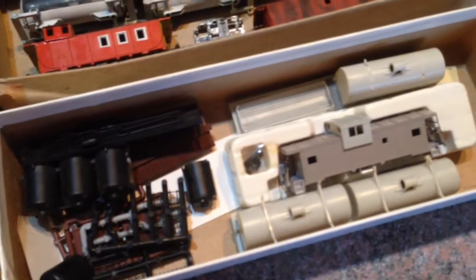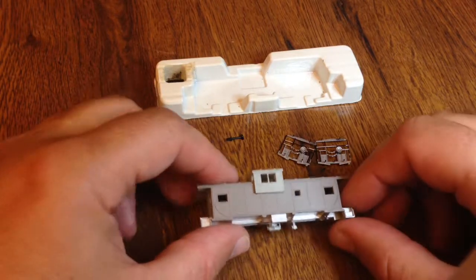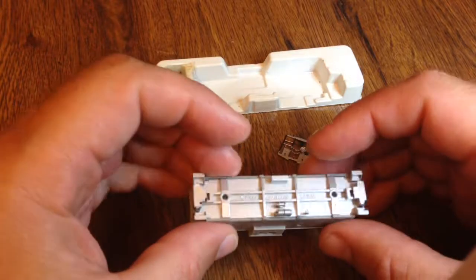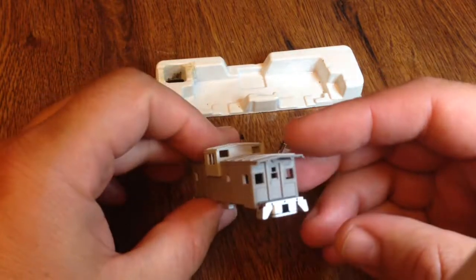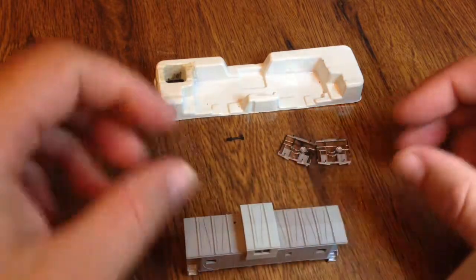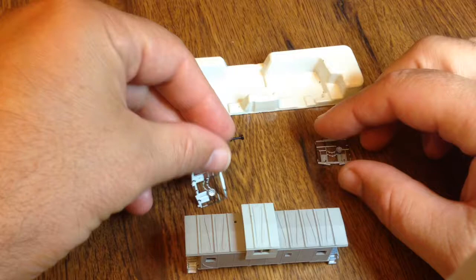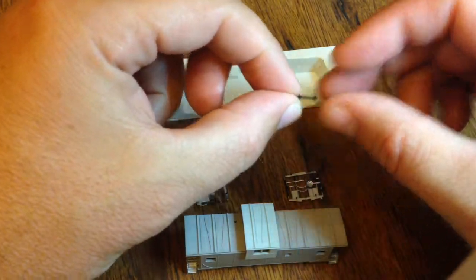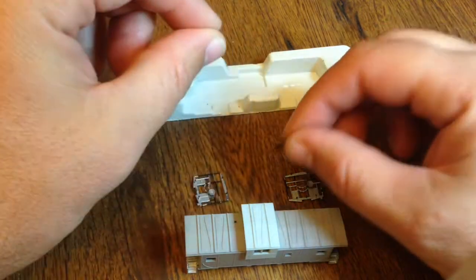Next, I'm going to paint this for you. It's an Atlas extended vision caboose. It just so happened I have decals for CP Rail. It's complete - it's got the two ends, and I even found the correct chimney for it by looking through the box.